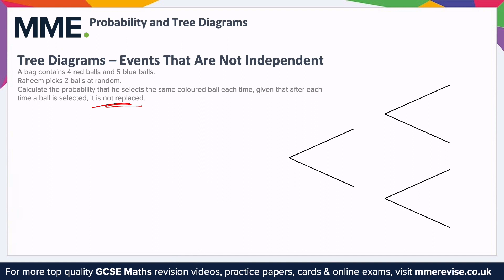Filling in the tree diagram: label the top as red and this one as blue, and the same for the other branches. The first probabilities are exactly the same as before. We've got nine balls in total at the start, four are red, so that's a probability of four ninths. For blue: nine in total, five blue, so five ninths. Again, these two add up to one.